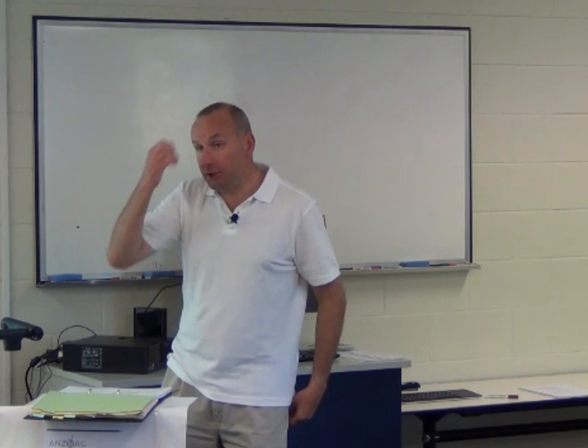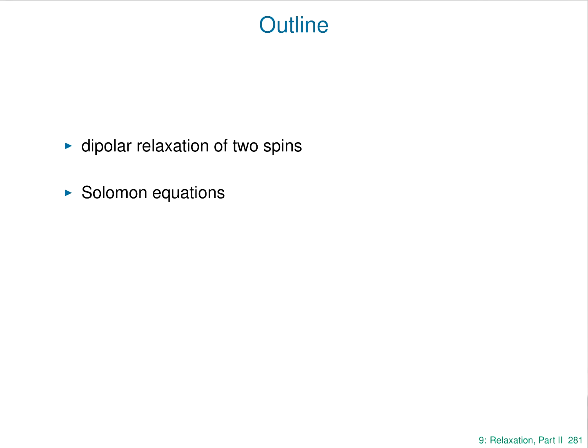One spin generates a local field at another — this is called the dipolar field if it's a pair of spins. It's reciprocal, so this is sometimes called the dipole-dipole interaction. If we think about longitudinal relaxation in such a system, you can develop a set of equations called the Solomon equations, which describe how the magnetisation in this system behaves over time, and using those equations you can describe how the nuclear Overhauser effect comes about.